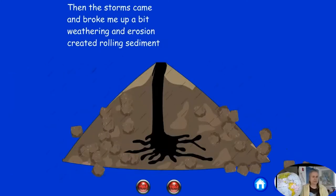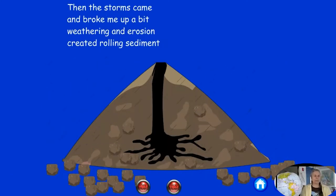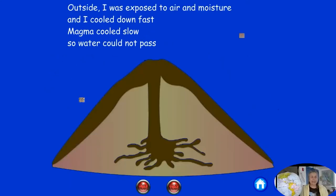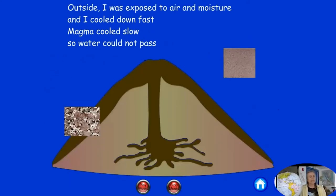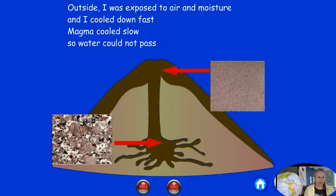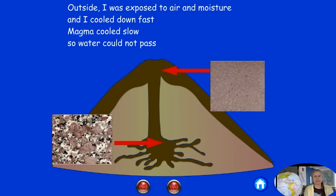When storms come they break rocks up and create rolling sediment. The mother rock type is igneous — a very hard rock that cools down differently. The ones on the outside cool very fast, which is why they have fine-grain minerals. The magma chamber, deeper inside the earth, cools slowly and makes big minerals. So there are many stories we can tell about igneous rocks — but that's a whole other story.